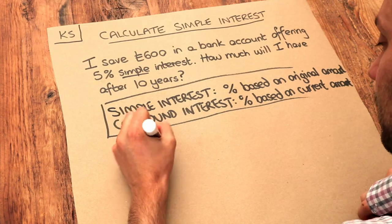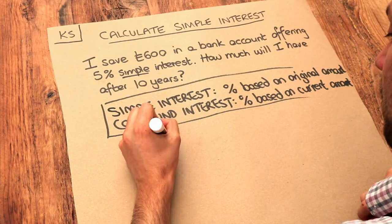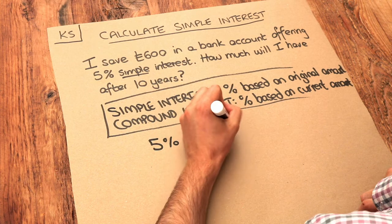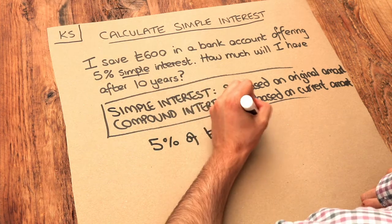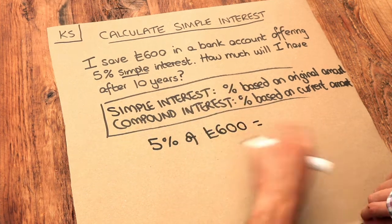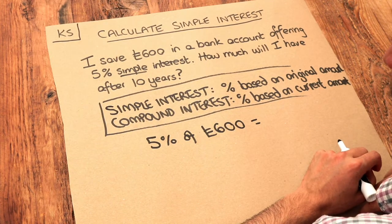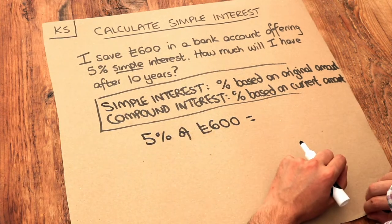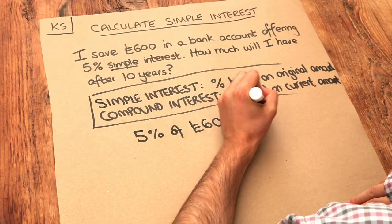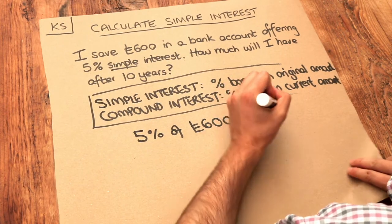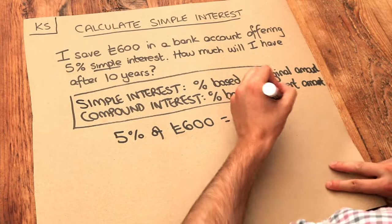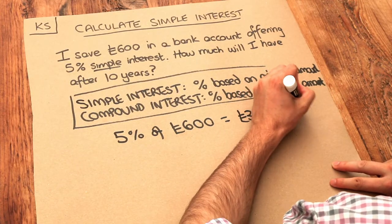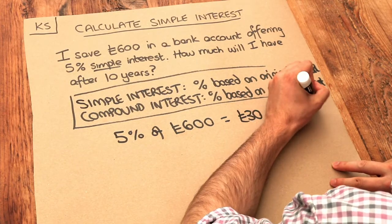5% of £600: well, 1% of £600 is £6, so 5% would be £30. That means we're going to get £30 interest per year.